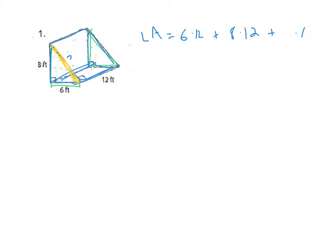How can I actually find that unknown length? Maybe remembering something about right triangles - Pythagorean theorem. 6 squared plus 8 squared equals c squared. That gives me c equals 10. So I'm putting in a 10 there, and then I'm going to add those up.